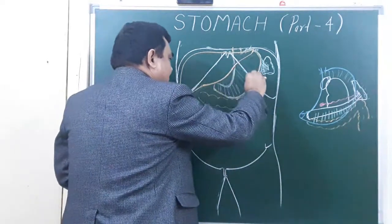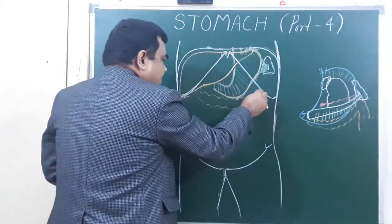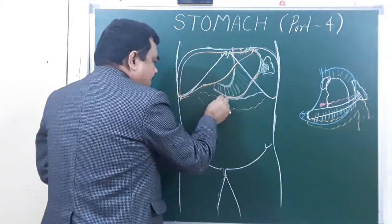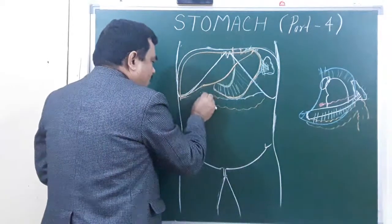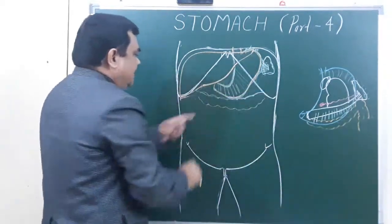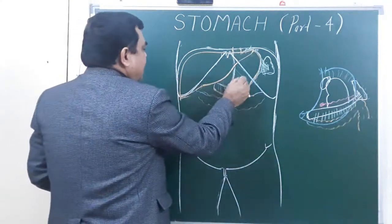Here is the left costal margin, and transverse colon. The triangle formed here is known as the gastric triangle.